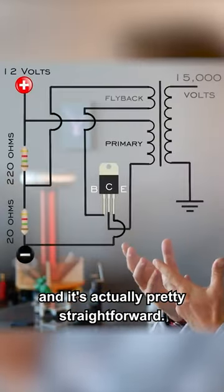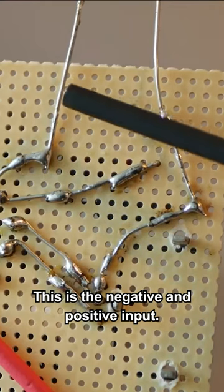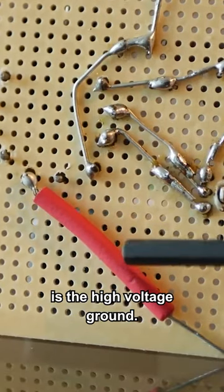Now the wiring follows this schematic, and it's actually pretty straightforward. This is the negative and positive input, and this guy right here is the high-voltage ground.